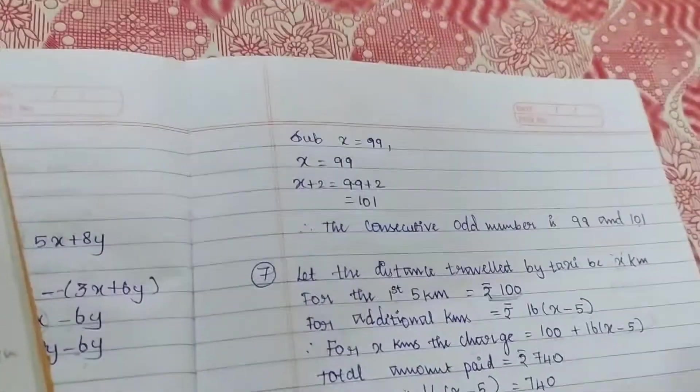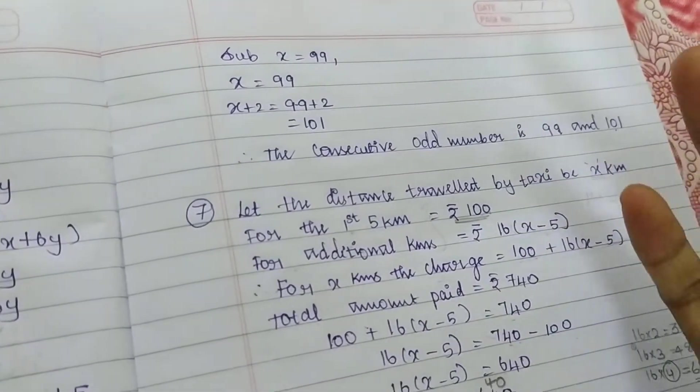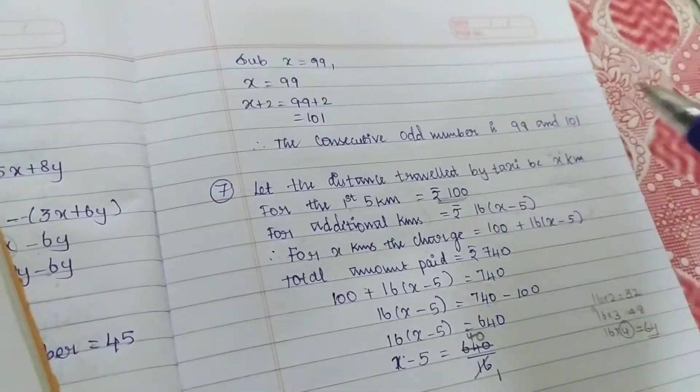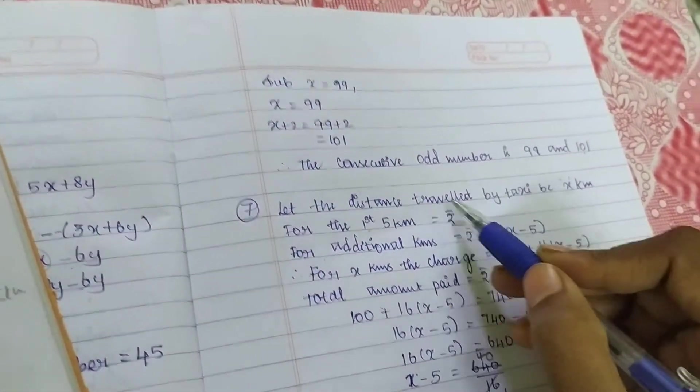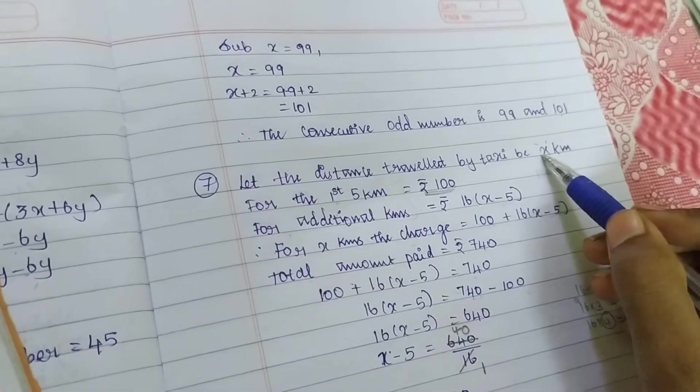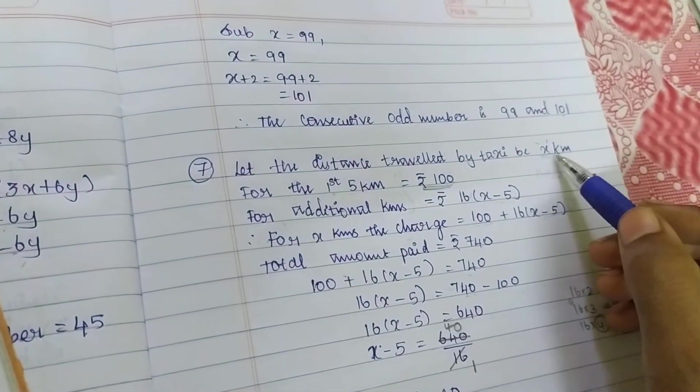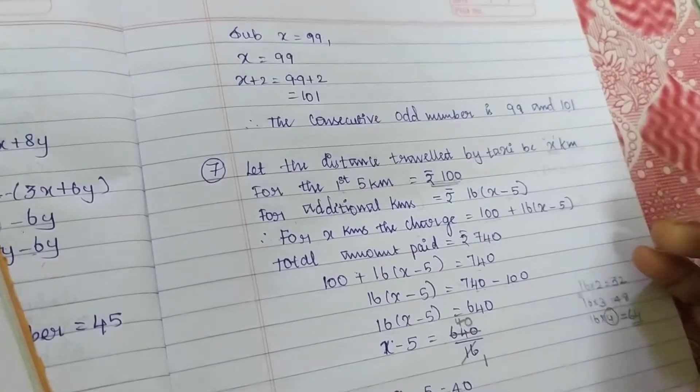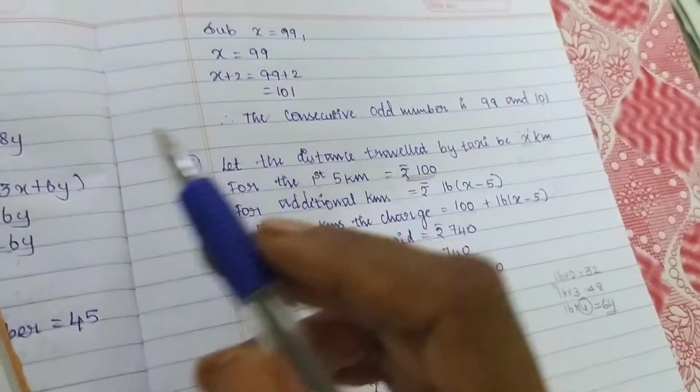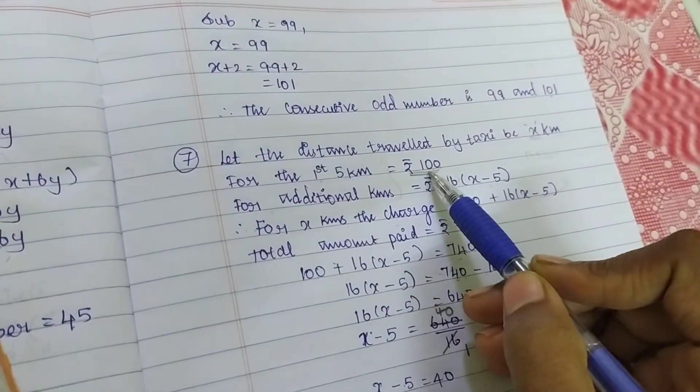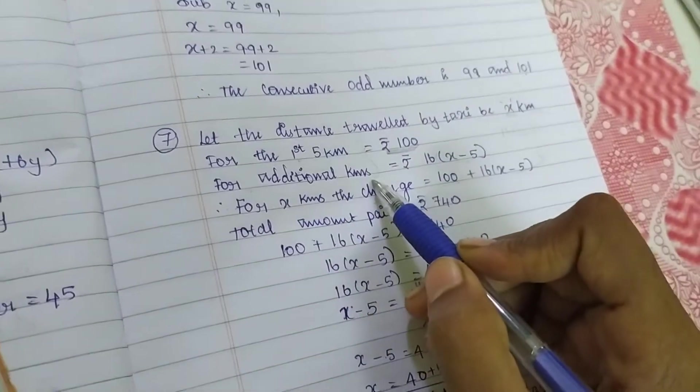Distance only asking. So I am writing my understanding: the distance traveled. They are asking distance traveled, right? So X kilometers. I don't know that value, means you can take variables. That's the algebraic process. Now what they mentioned: first 5 kilometers is rupees 100 they pay.